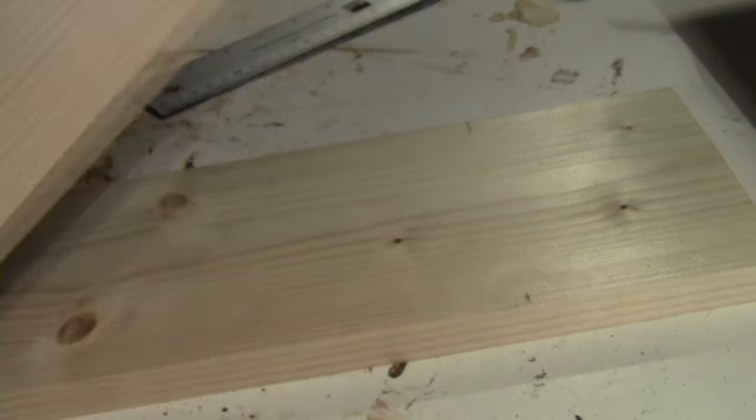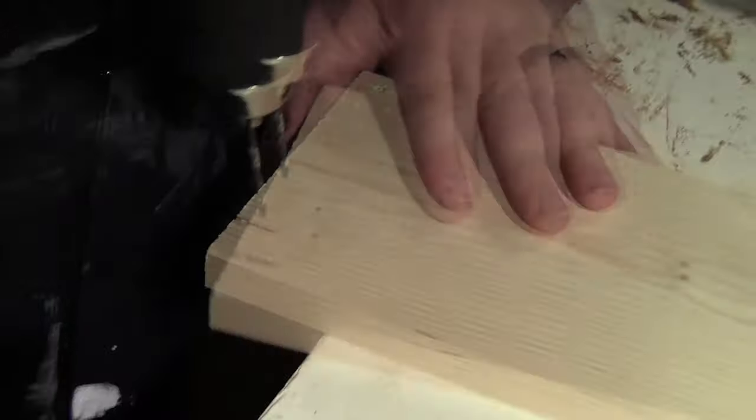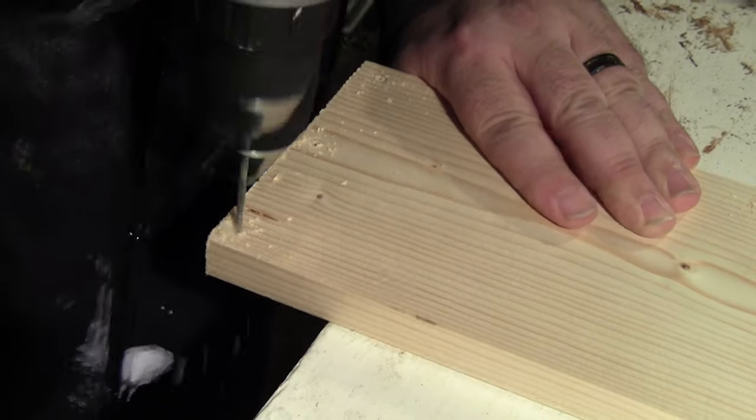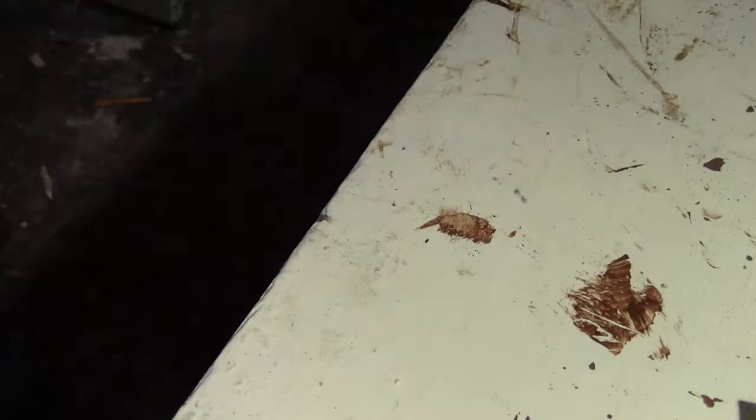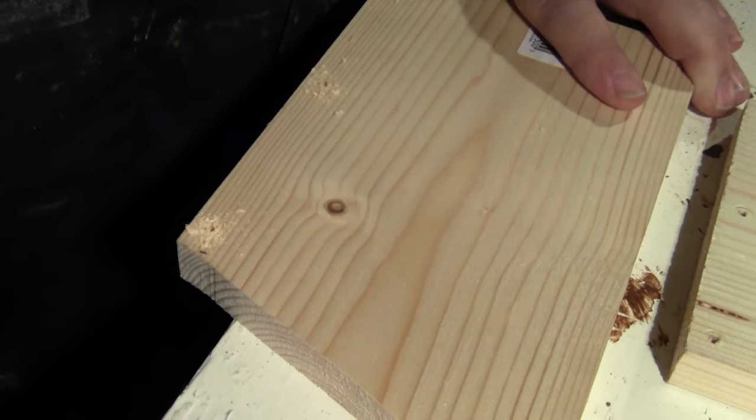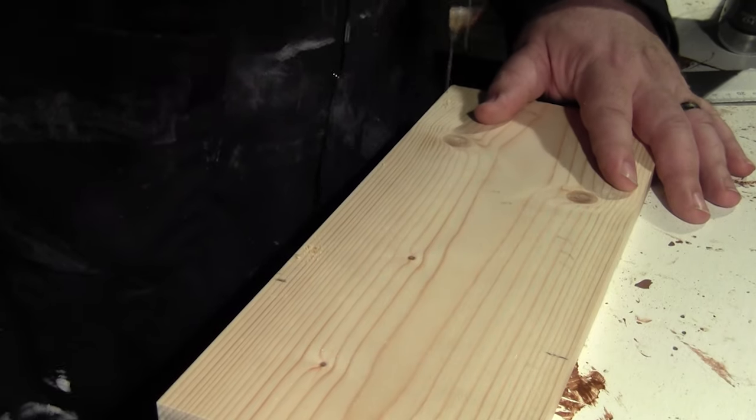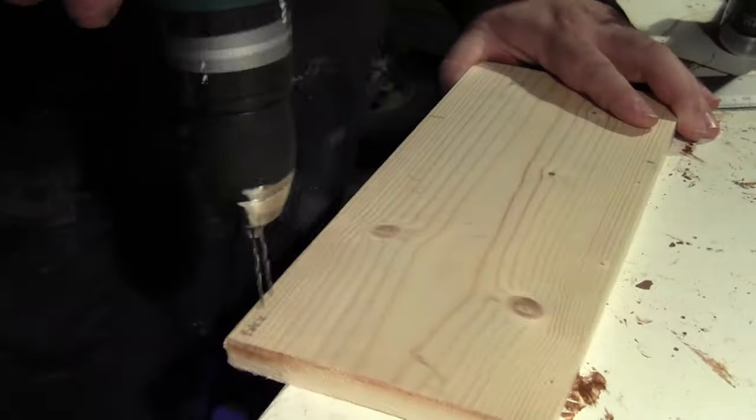The pine that I'm using is quite cheap to buy. It's kiln dried and nice and smooth, but it is liable to split when you force the screws through. So here I'm pre-drilling the holes where the screws will go using a two and a half millimeter drill bit to take the edge off the forcing.